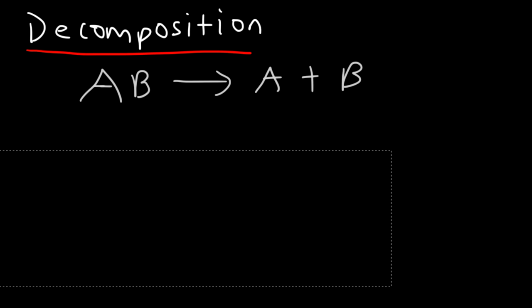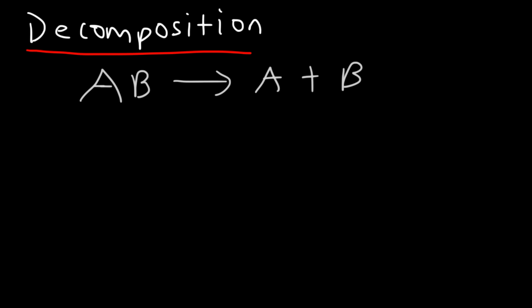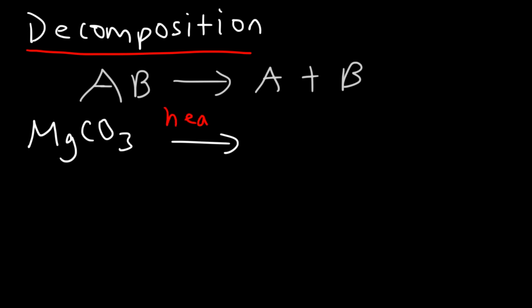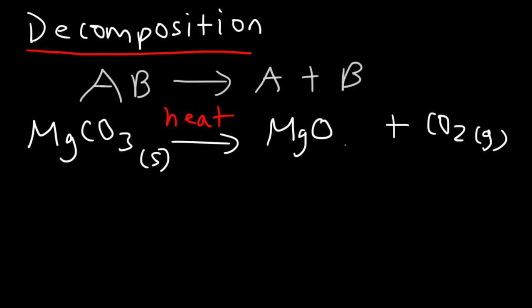For example, we talked about forming magnesium carbonate. If you have a metal carbonate and add heat to it, you can get the metal oxide back. Heat drives away the volatile component — CO2 escapes into the air, leaving magnesium oxide behind.